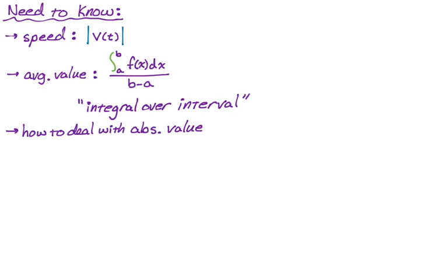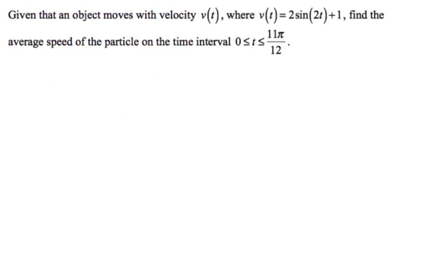We also need to know how we're going to deal with absolute value, but that's something you've probably been dealing with for a while and we're going to handle it in the problem. Here's the problem we're going to solve: given that an object moves with velocity v(t) = 2sin(2t) + 1, we're going to find the average speed of the particle on the time interval from 0 to 11π/12.